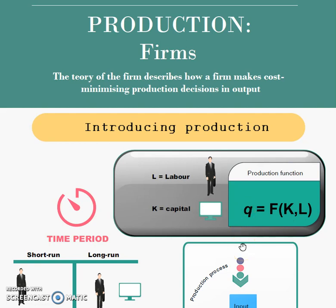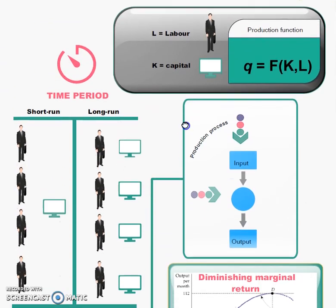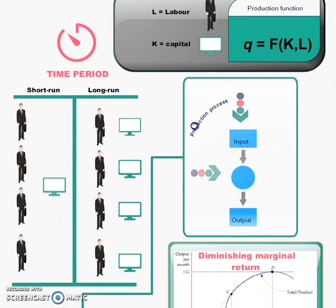When we look at production, we always look at time. Time is very important when we talk about production because we have two periods. The first is the short run, and the second is the long run. The major difference is that in the short run, you only have one input that is variable.